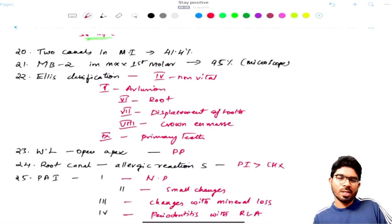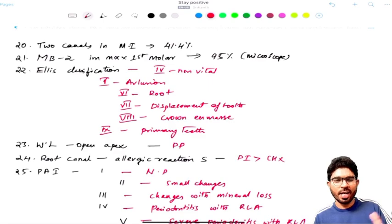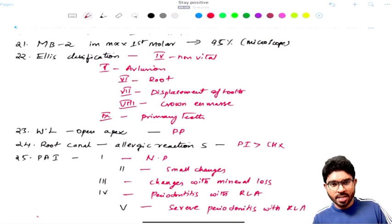So I don't want to discuss much about the Ellis classification. Ellis classification type 1, type 2, type 3 are very familiar: enamel, enamel dentin, enamel dentin and pulp. Type 4 is non-vital. Type 5 is avulsion. Type 6 is fracture of the root. Type 7 is displacement of the teeth. Type 8 is crown and fracture. And type 9 is any sort of damage related to the primary teeth.